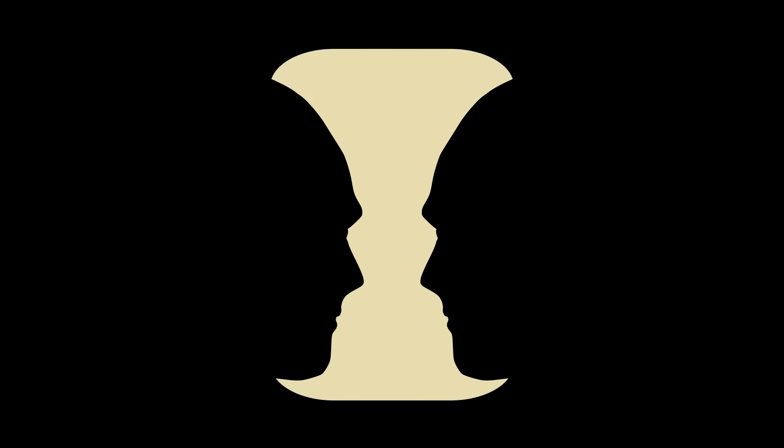Rubin's Vase. Is this a vase, or are they two faces looking at each other? This is an example of ambiguous two-dimensional forms, and it's a perfect demonstration of the figure-ground distinction the brain makes. Since the figure and the ground are not distinguishable in this image, they are interchangeable.